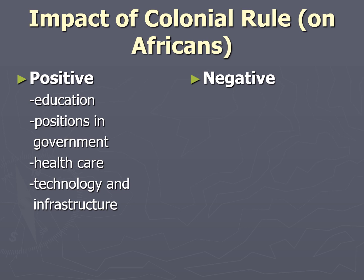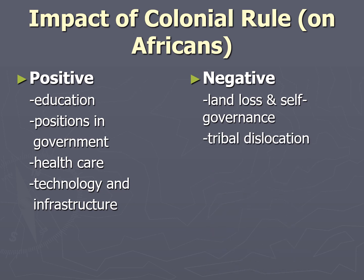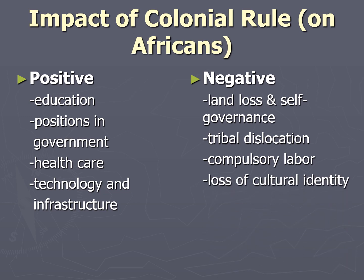This brings us to the negative impacts: the loss of land and self-governance, including control of natural resources; tribal dislocation, as the borders drawn on the map of Africa split up many ethnic groups and put together multiple ethnic groups that often didn't get along; compulsory labor, as in the case of the Belgian Congo where thousands of Africans were treated as slaves in the rubber plantations; and most significantly, the loss of cultural identity — languages dying out and customs being prohibited. These are just a few of the impacts that Europeans had on Africans, many of which still plague Africa today.